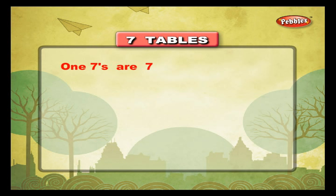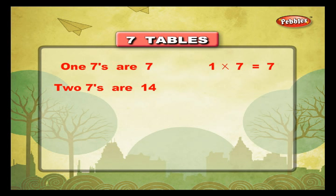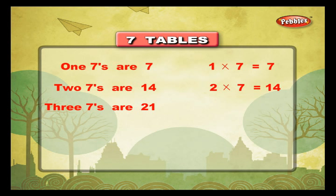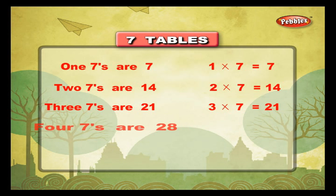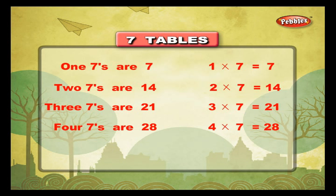1 seven is 7, 1 into 7 is equal to 7. 2 sevens are 14, 2 into 7 is equal to 14. 3 sevens are 21, 3 into 7 is equal to 21. 4 sevens are 28, 4 into 7 is equal to 28. 5 sevens are 35, 5 into 7 is equal to 35.